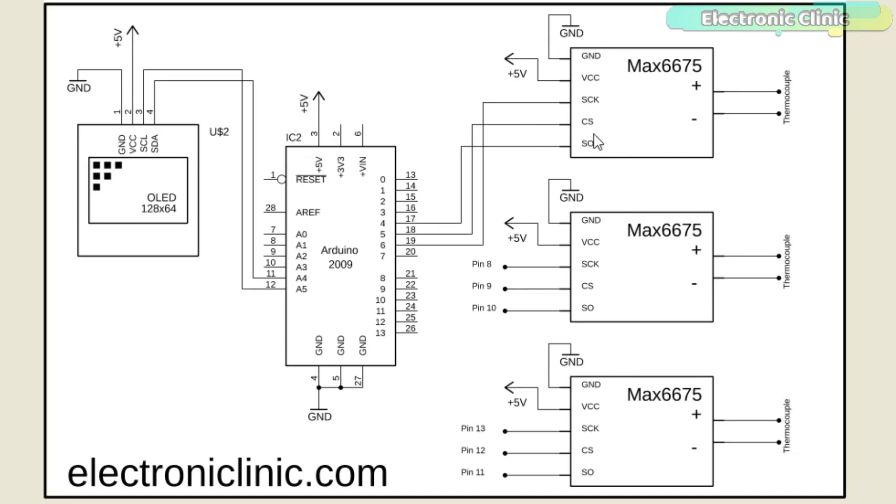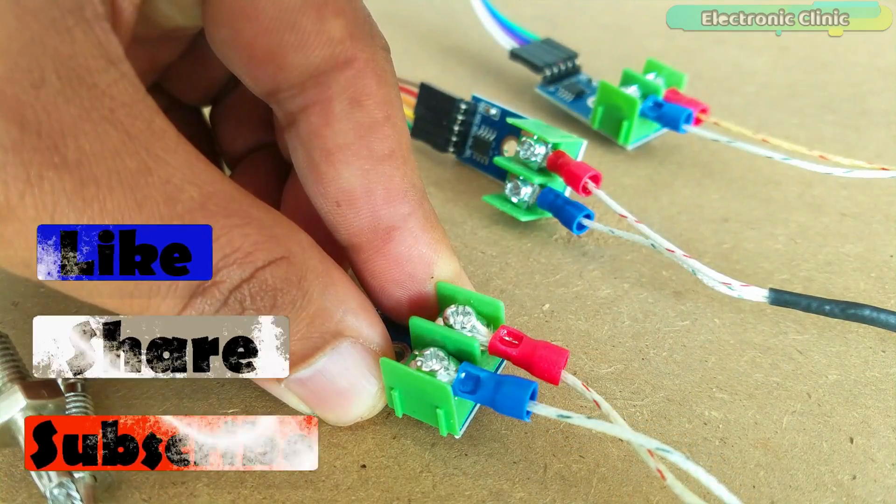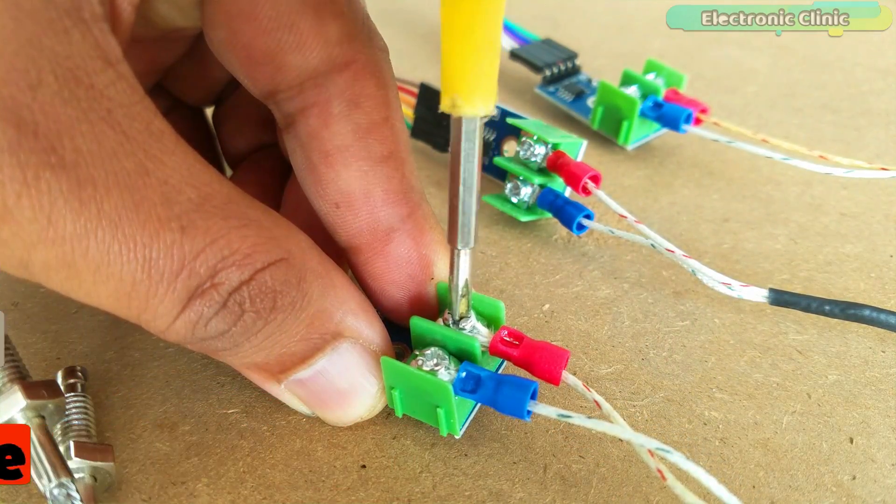The SCK, CS and SO pins of the first temperature sensor module are connected with your Arduino's pins 6, 5 and 4. The SCK, CS and SO pins of the second temperature sensor module are connected with your Arduino's pins 8, 9 and 10. While the SCK, CS and SO pins of the third MAX6675 temperature sensor module are connected with your Arduino's pins 13, 12 and 11. I connected everything as per the circuit diagram. Now let's have a look at the Arduino programming.